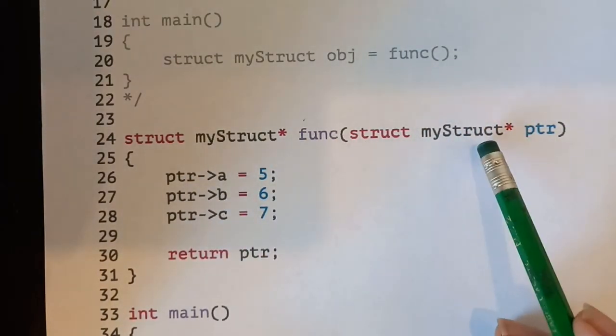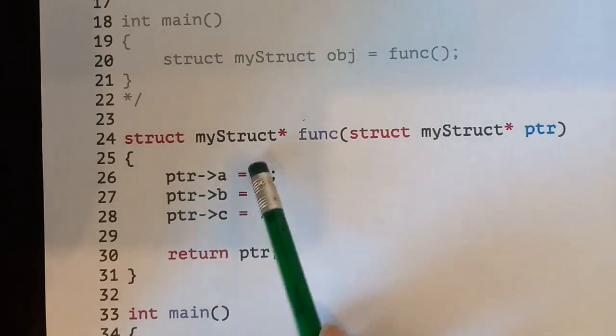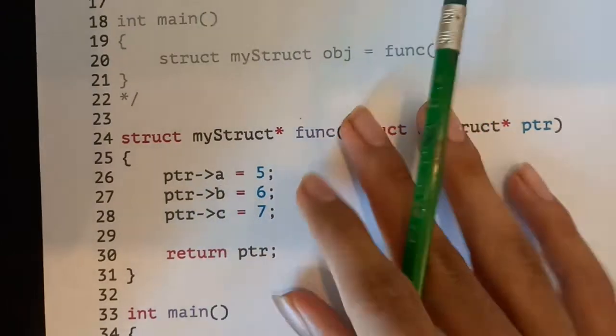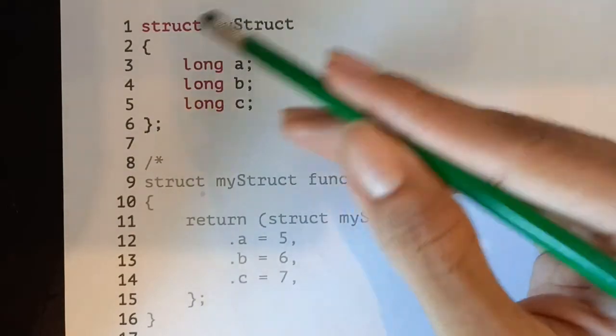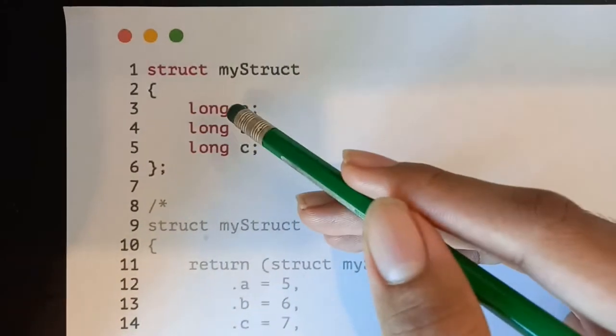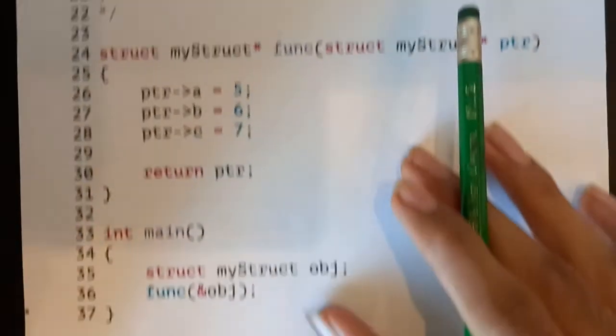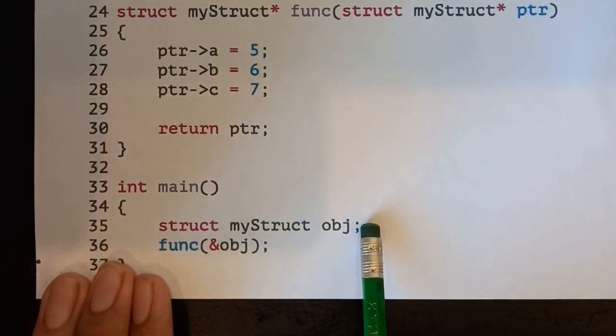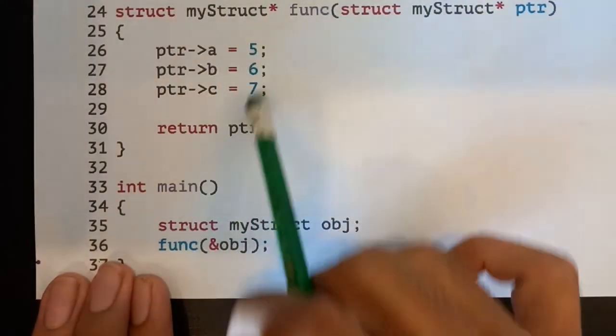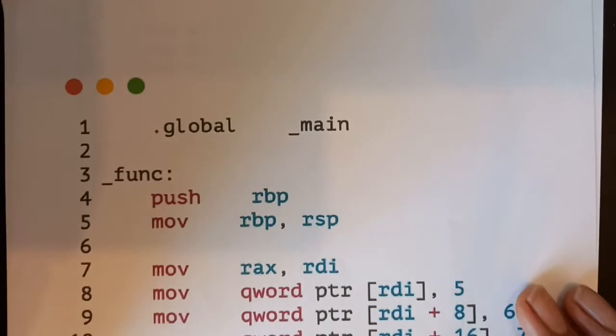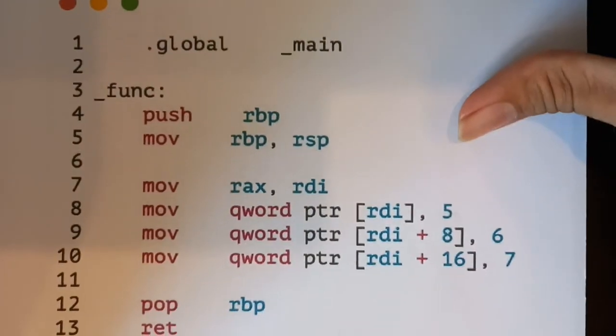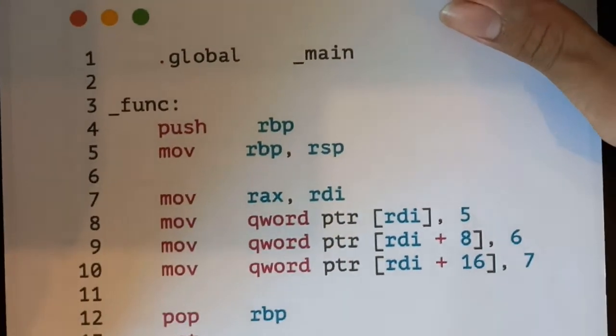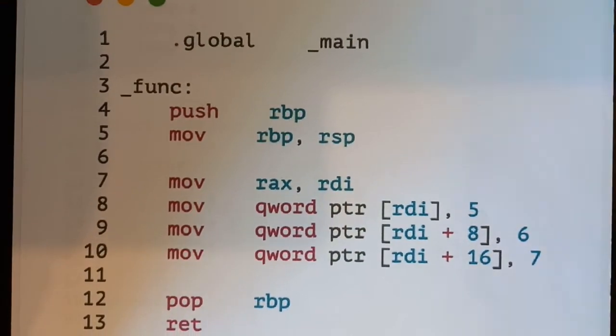It just takes a pointer to a struct, and then it sets some values of that pointer and returns the pointer. So we're basically, someone allocates the structure, gives us a pointer to this structure, and then we basically just initialize it with some values. And you can see a pretty trivial example of it being used here. We're just allocating a struct on the stack, and then we're initializing it. Now, if you want to take a look at this code, how it plays out in assembly, it's, surprisingly, I guess it's, again, surprisingly simple.